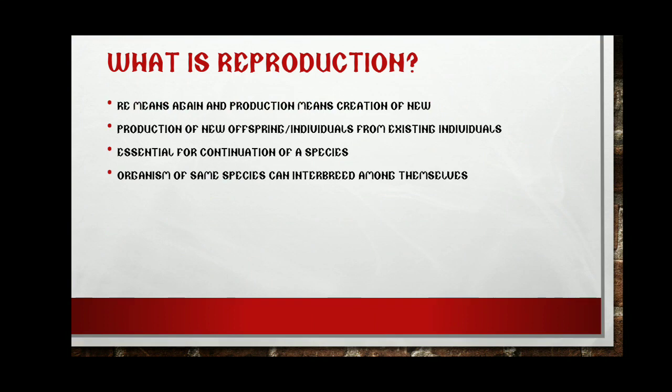So let's get started. What is reproduction? It is composed of two words: 're' means again, and 'production' means creation of new. So reproduction means production of a new organism or individual from an existing individual. This is necessary for the continuation of the species — every organism will die after a certain stage of life, and if they are not reproducing and producing new individuals, a time will come when there will be no individual left of that species on Earth, leading to extinction.